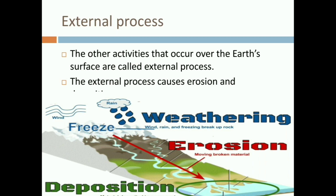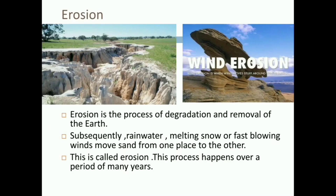Now, external process. The activities that occur over the earth's surface are called external process. The external process causes erosion and deposition. However, these processes are very slow and happen over many years. Erosion is a process of degradation and removal of the earth's surface, or wearing away of the top surface of the earth. You would have seen sand — it is a fine particle of stones, and stones are smaller pieces of rocks.